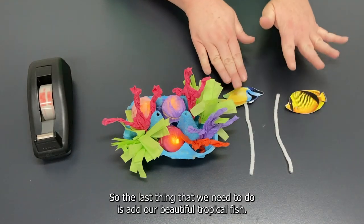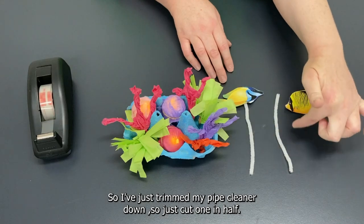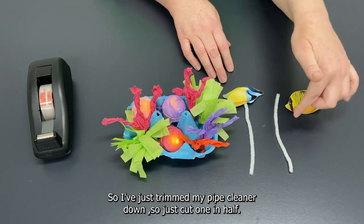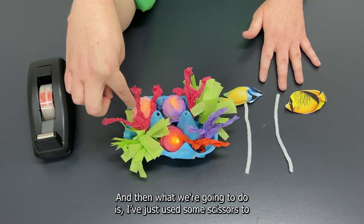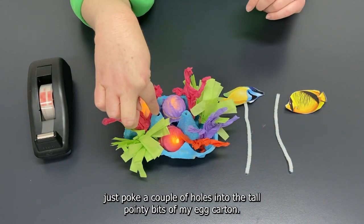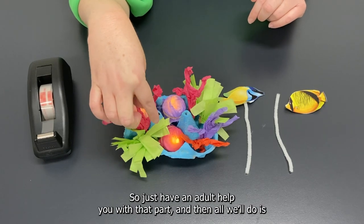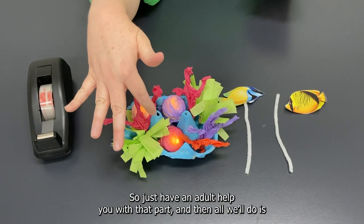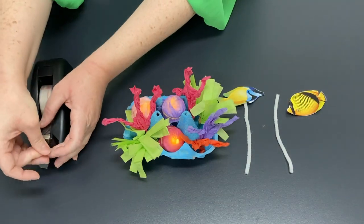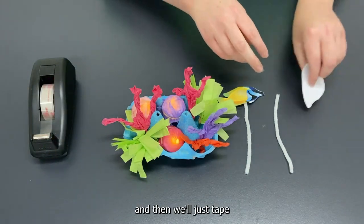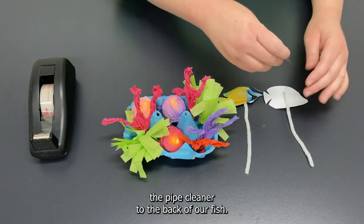So the last thing that we need to do is add our beautiful tropical fish. So I've just trimmed my pipe cleaner down so just cut one in half and then what we're going to do is I've just used some scissors to just poke a couple of holes into the tall pointy bits of my egg carton. So just have an adult help you with that part and then all we'll do is grab our sticky tape and then we'll just tape the pipe cleaner to the back of our fish.